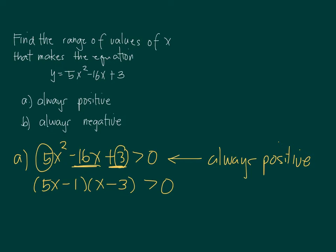If we check, this is negative x, and this is negative 15x. The sum of the two should be the one in the middle of the quadratic expression, which is correct.